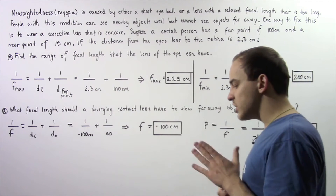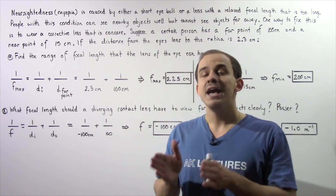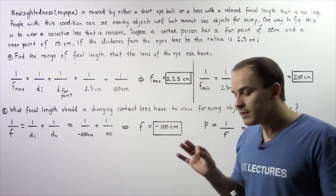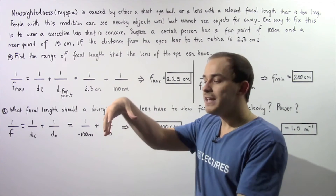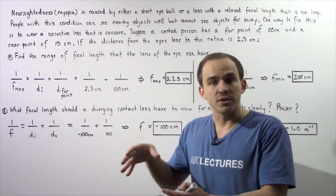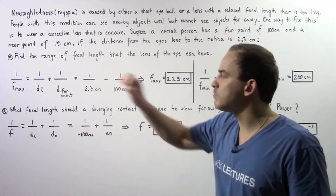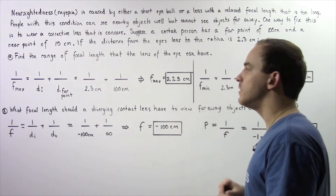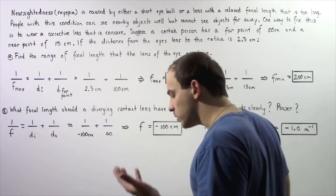In part A, we want to find the maximum focal length and the minimum focal length of the lens of the eye. The ciliary muscles connected to the lens of the eye are capable of increasing or decreasing the curvature of the lens, thereby increasing or decreasing its focal length. So we want to find the range of focal length values of the lens of the eye.